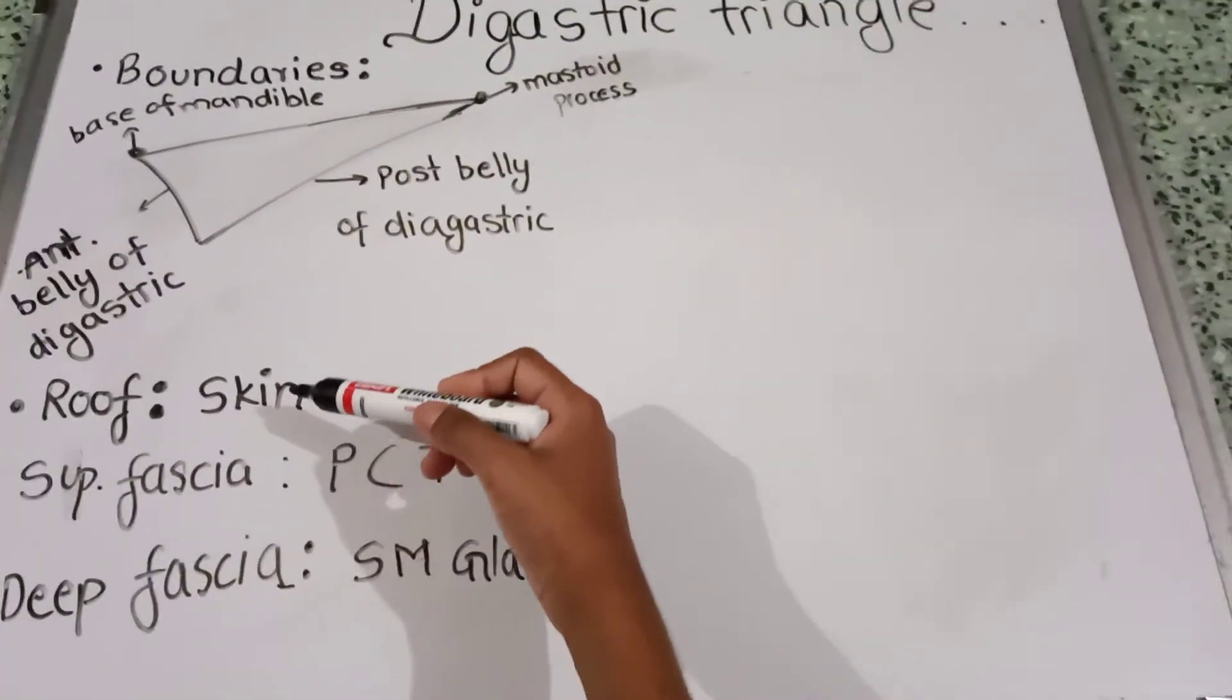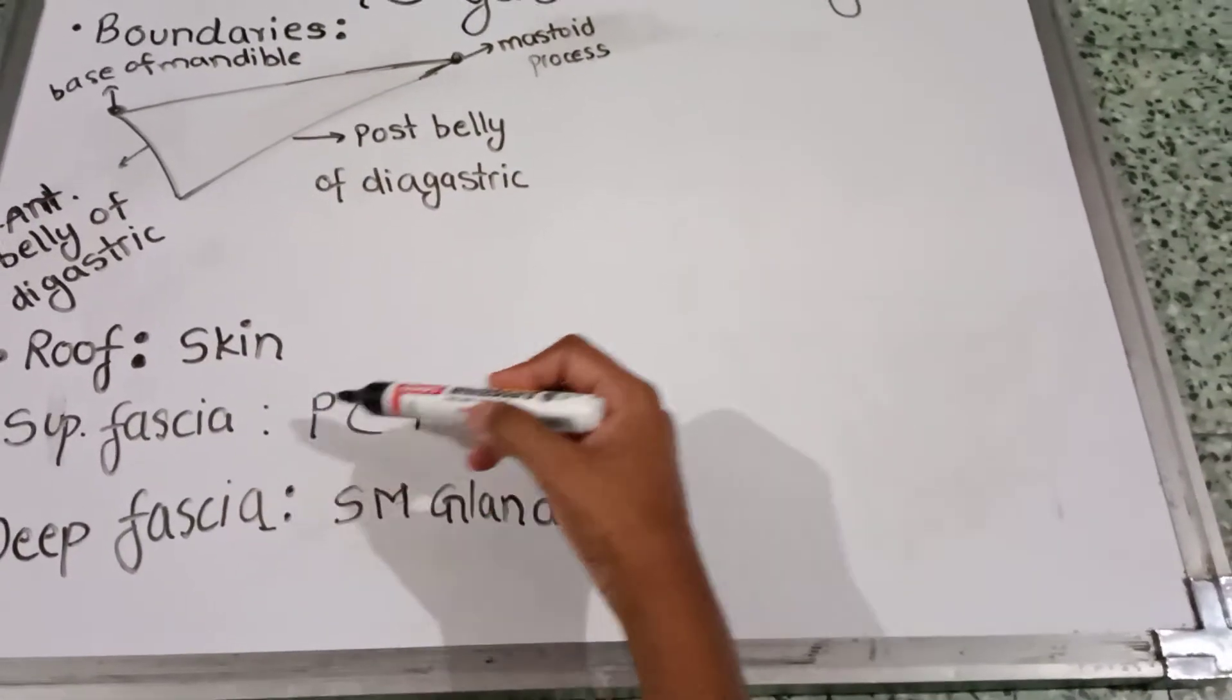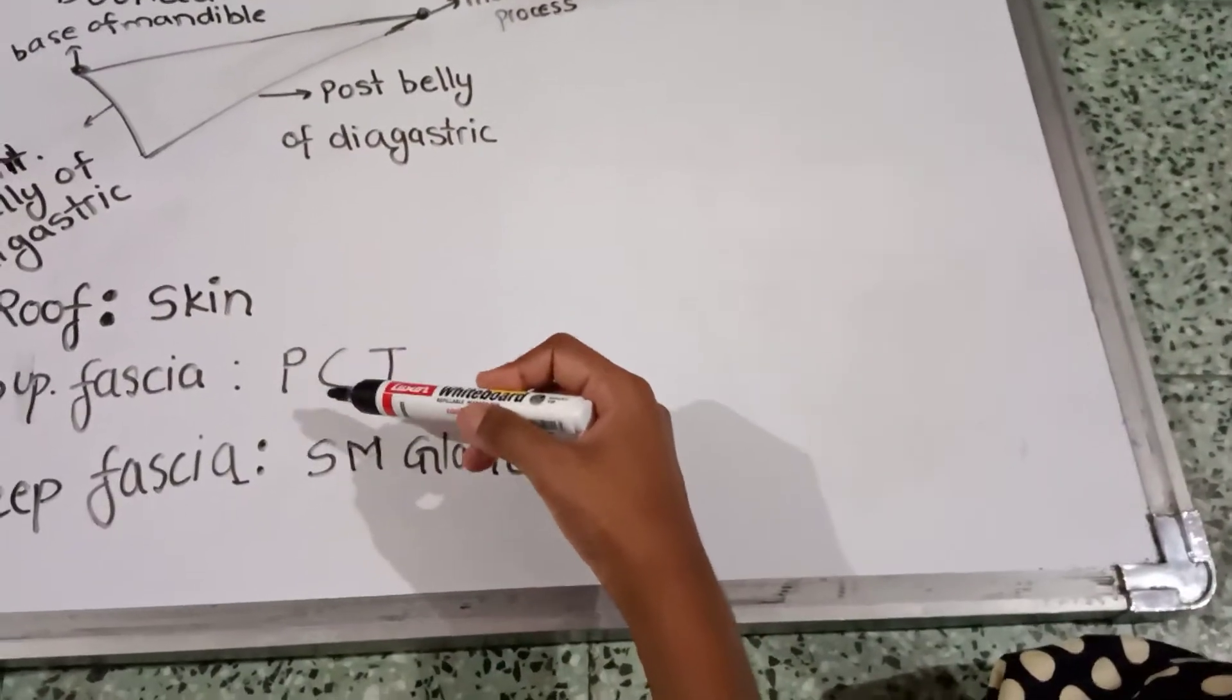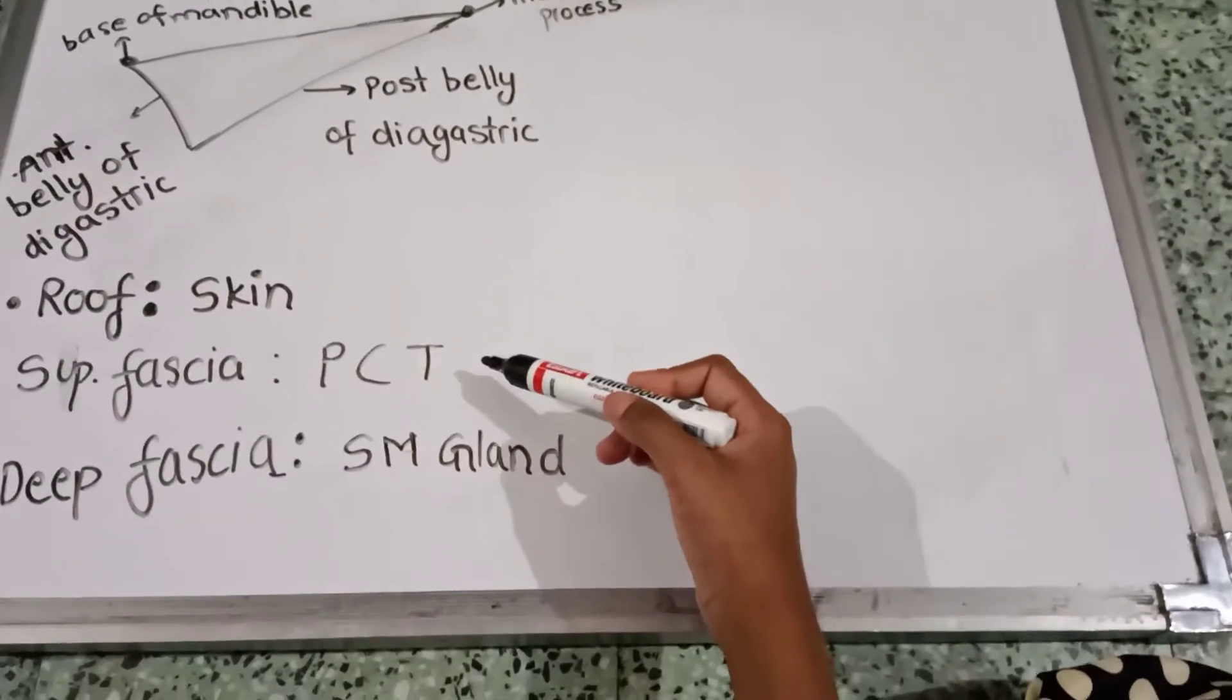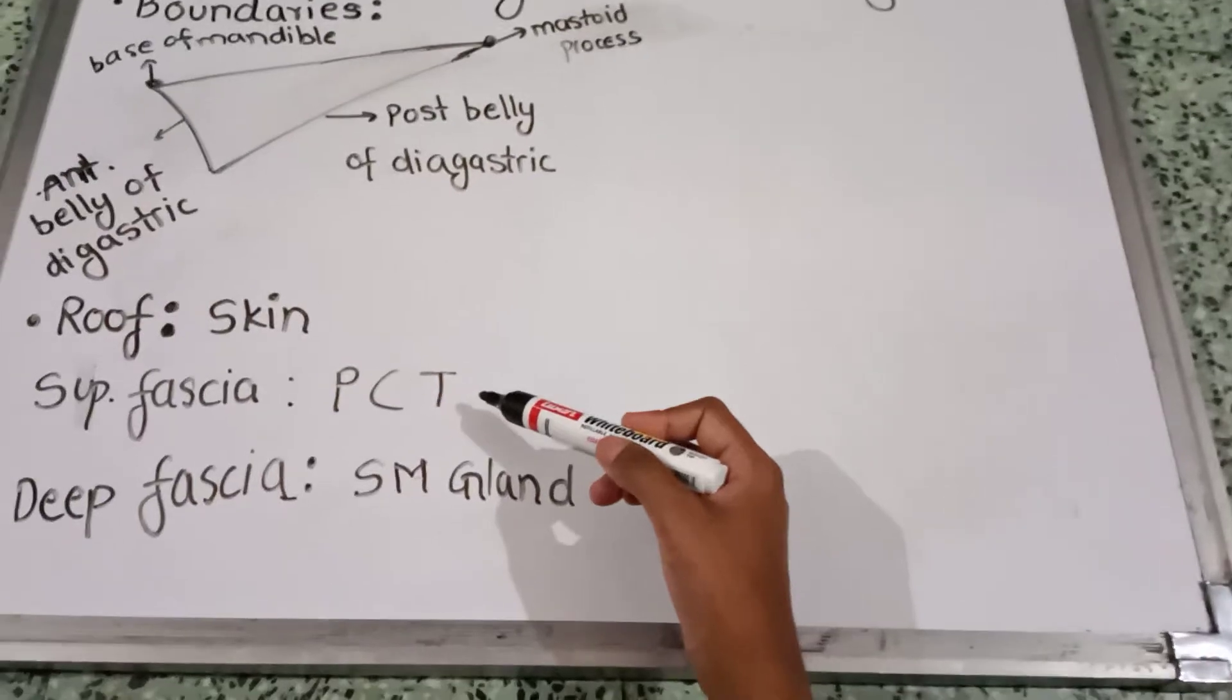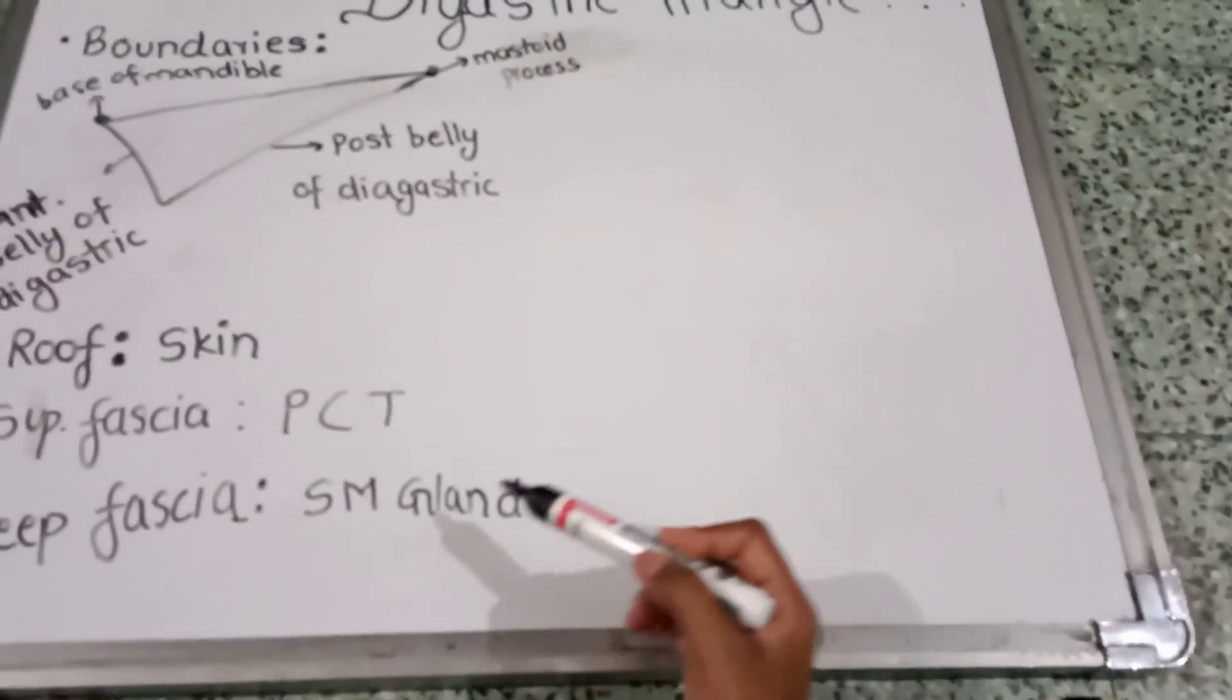Roof: It is formed by the skin superficial fascia which contains PCT - P for platysma, C for the cervical branch of the facial nerve, T for the ascending branch of the transverse cutaneous nerve, then deep fascia which contains the submandibular gland.